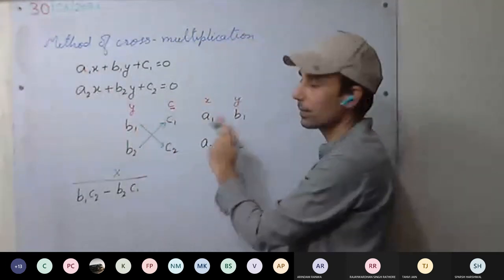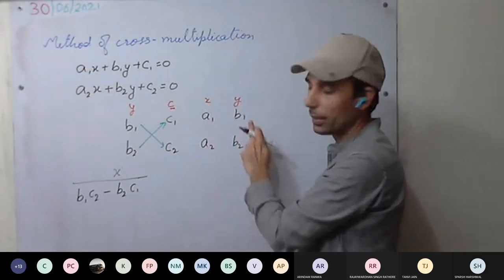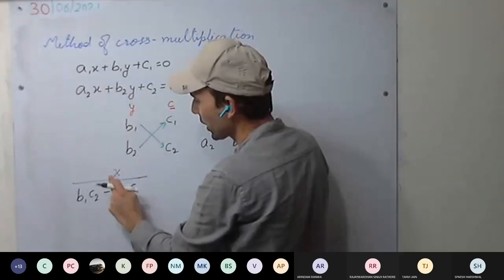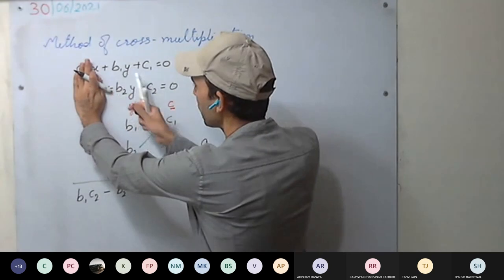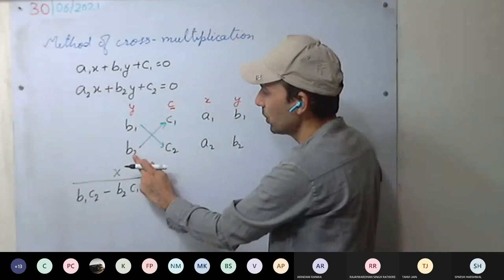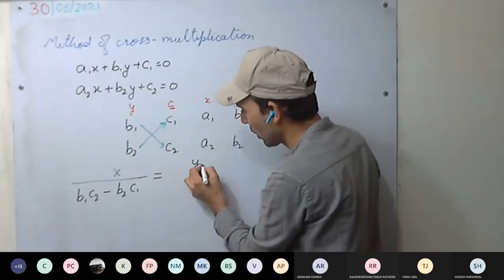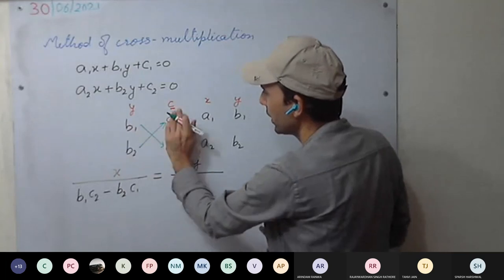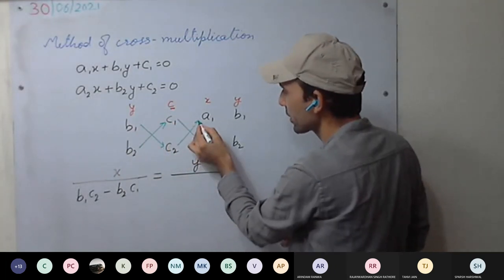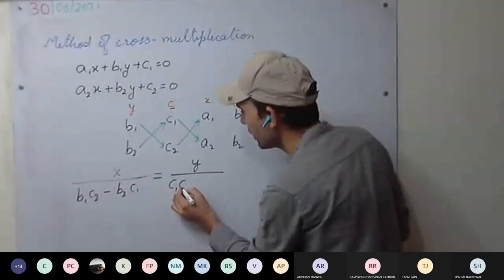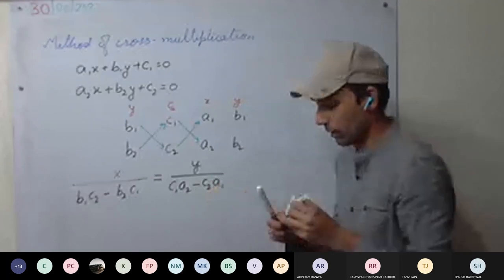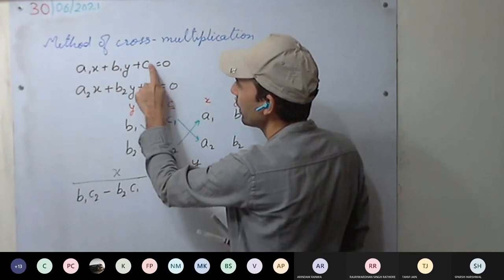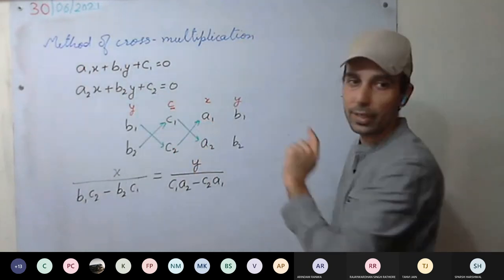Either you write it by listing y quotients first, then constant terms, then x quotient, then y quotient, or you can do it directly. Forget about the x terms, start from here: b1, c2, b2, c1 — giving b1c2 minus b2c1. Then for y, forget about y terms, next is c1, a2, minus c2, a1. That is c1a2 minus c2a1.